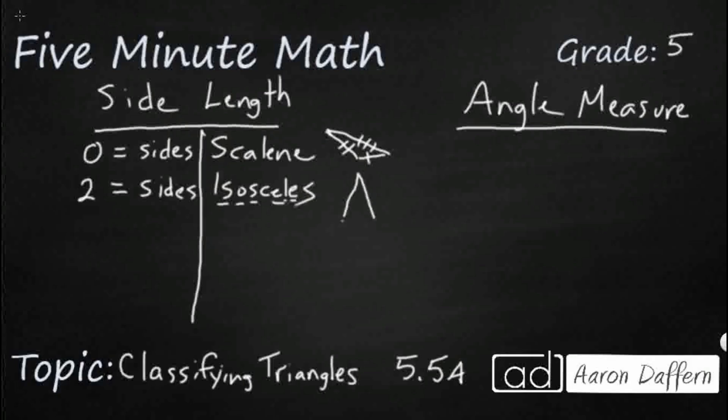So you've got your traditional isosceles like this. You've got these two are the same, that one's different. You could also say that this particular triangle, which we're going to look at in just a moment, all three sides are the same, but it's also an isosceles because it has at least two sides that are the same. Now, this triangle has a special name all by itself, and that is three equal sides.